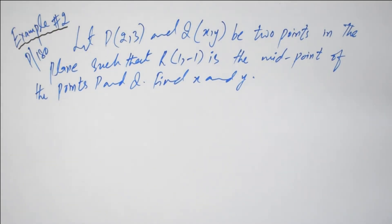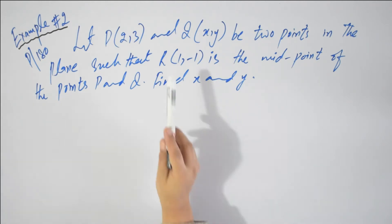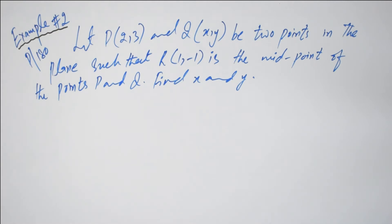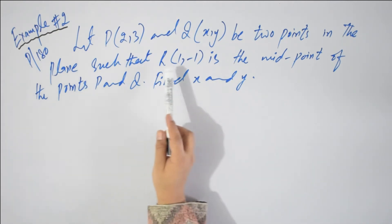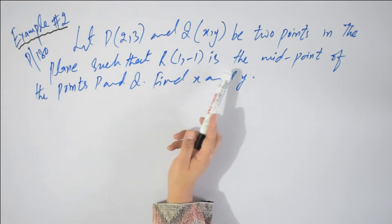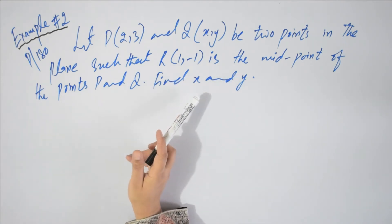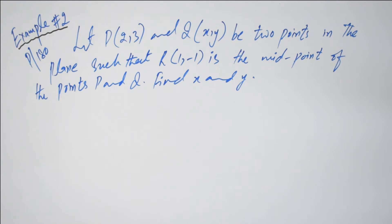Assalamu alaikum students. Today I am doing example number 2 at page number 180. I am reading the question: let P of 2 comma 3 and Q of x comma y be two points in the plane such that R is the midpoint of the points P and Q — point x and y.